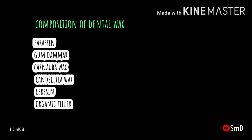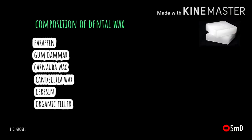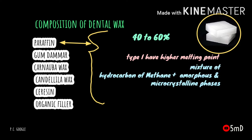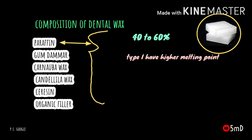The first and major component of dental wax is paraffin wax, which forms about 40 to 60 percent of the dental wax's weight. Paraffin wax used for Type 1 is of higher melting point than that used for Type 2. Paraffin is a complex mixture of hydrocarbons of methane along with amorphous and microcrystalline phases.